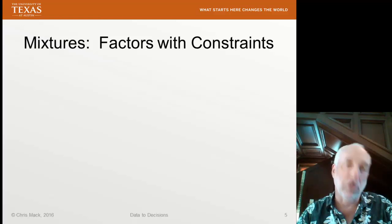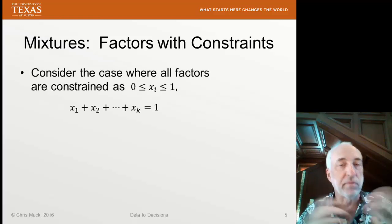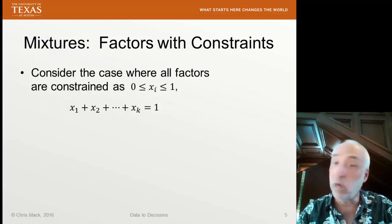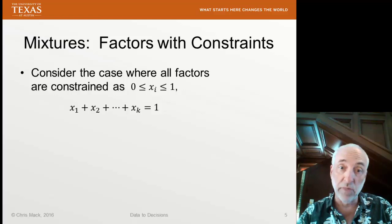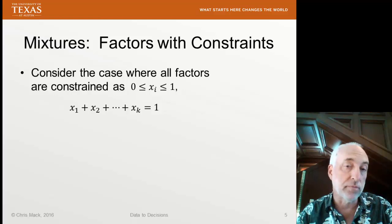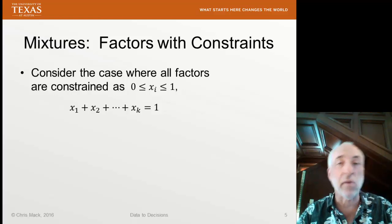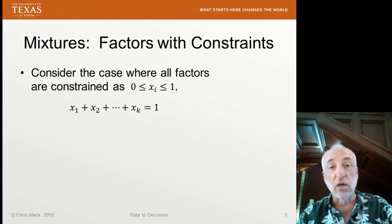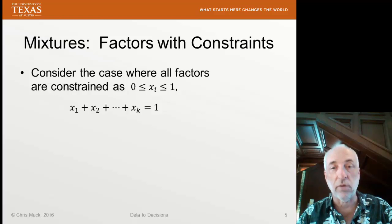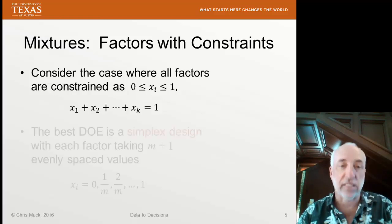Here's another miscellaneous topic: sometimes we have factors with constraints. For example, mixtures — suppose I'm mixing chemicals and varying the weight percent of each material. Every material's weight percent can only go from zero to one, and the constraint is that the sum of all weight percents must equal one. How do you design an experiment in this case? All the factors are no longer independent of each other as we assumed in full factorial or central composite designs. The method we use is called the simplex design.